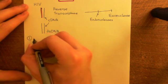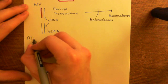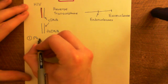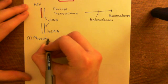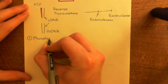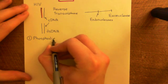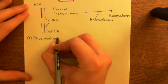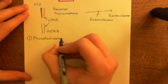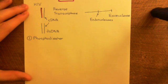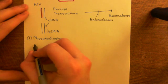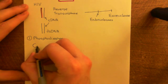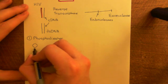Number one, you can use what are known as phosphodiester antisense oligonucleotides. This basically just means that you do actually use a single-stranded piece of DNA. Now, why is it called phosphodiester?